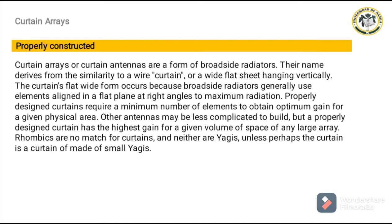Curtain Arrays, or Curtain Antennas, are a form of broadside radiators. Their name comes from their resemblance to a wire curtain or a vertically hung large flat board. Since broadside radiators use elements aligned in a flat plane at right angles to optimum radiation, the curtain has a flat wide shape. To achieve optimal gain for a given physical area, properly designed curtains require a minimum number of elements. Any large array with a properly constructed curtain has the highest gain for a given volume of space.